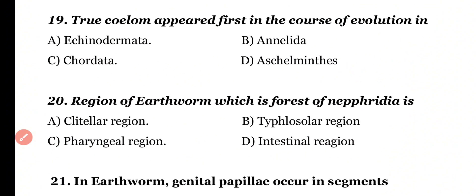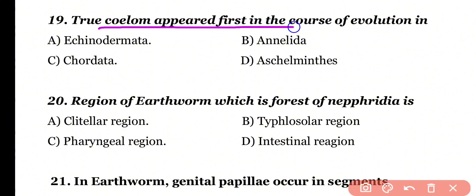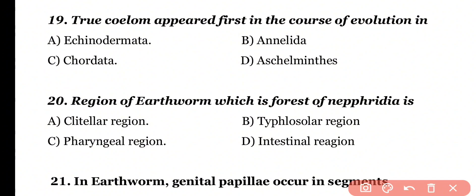Question number 19. True coelom appeared for the first time in the course of evolution in: Echinodermata, Annelida, Chordata, or Platyhelminthes. Correct answer is option B. In Annelida, true coelom appeared for the first time — it is schizocoelom.